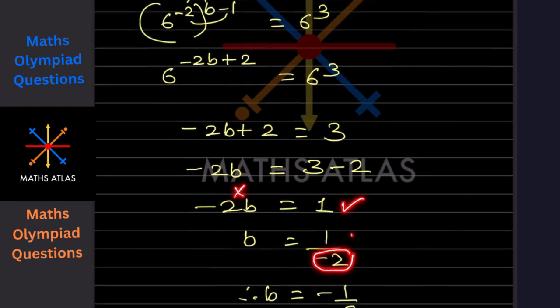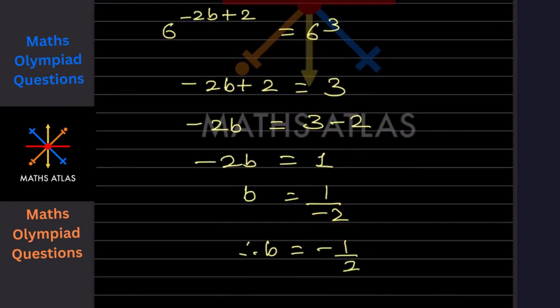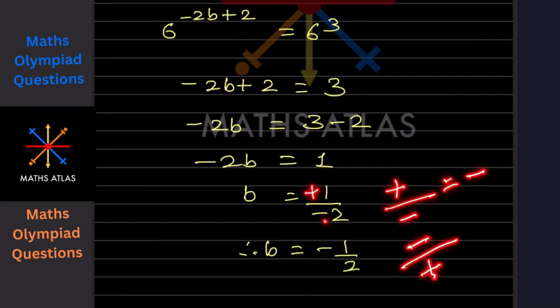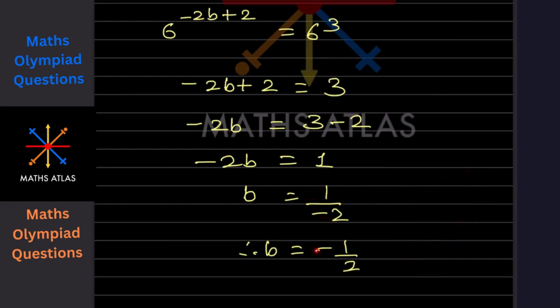We can write this as minus 1 by 2. Whenever plus divided by minus, that is going to be minus. And whenever you write minus divided by plus, that also is going to be minus. So this is the answer.